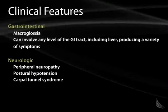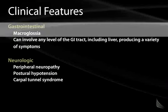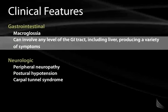One can also see deposition of amyloid in other organs that can be discerned on a simple physical exam. One of the most common places to see amyloid deposition in the GI system is within the tongue. If you see a patient with unexplained macroglossia or enlargement of the tongue, put amyloid on your differential diagnosis. Remember that any level of the GI tract can be involved, including the liver, producing a variety of symptoms.